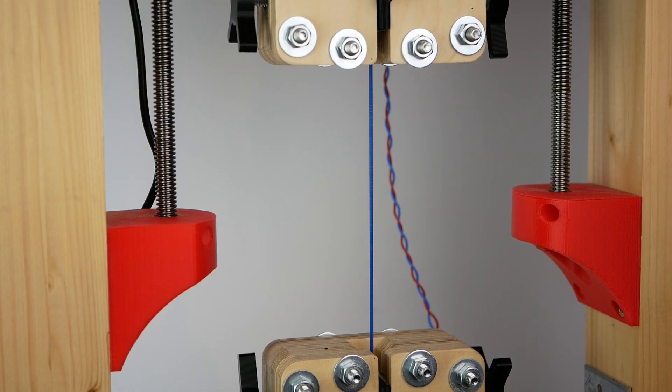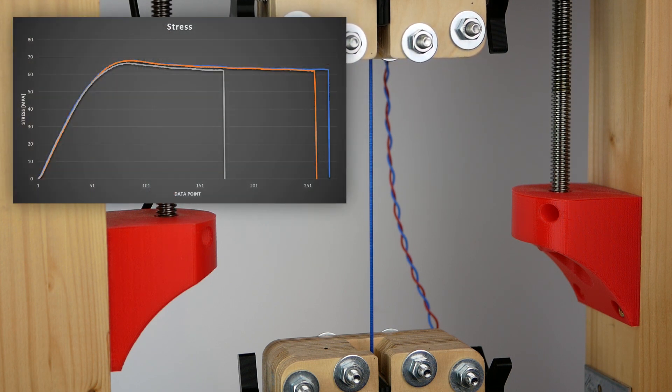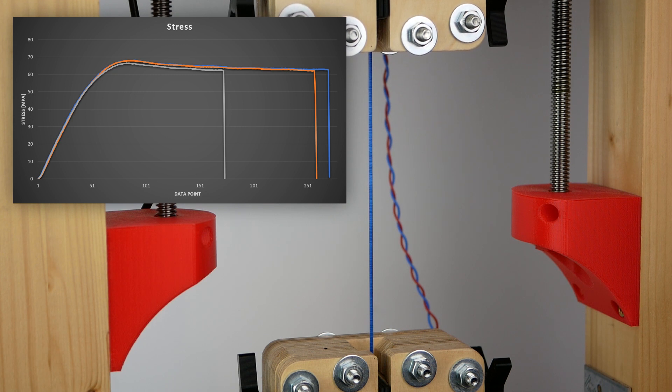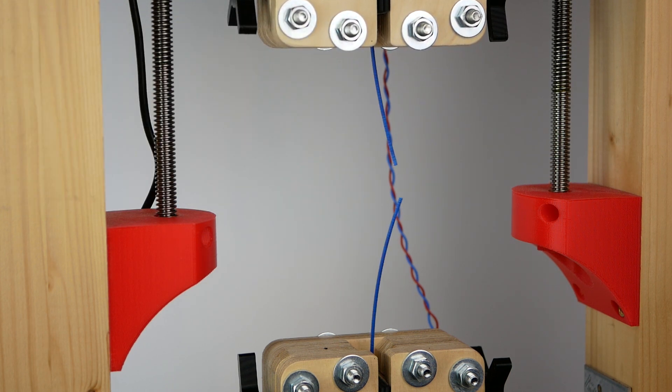If we perform this test even simpler and only rip a piece of filament apart, the properties are exactly the same with a tensile strength of 67 MPa and quite a lot of yielding before failure.